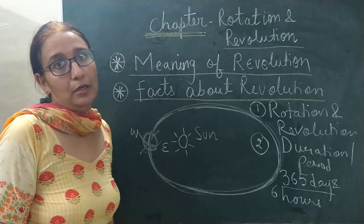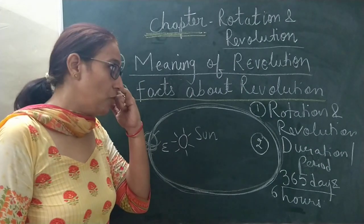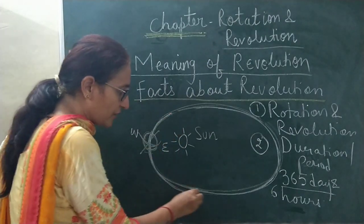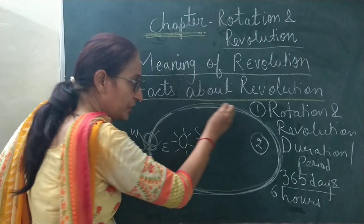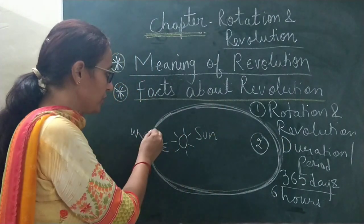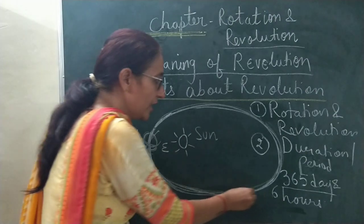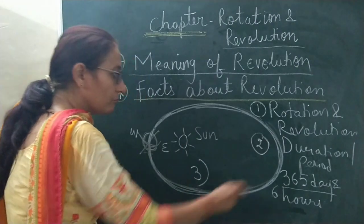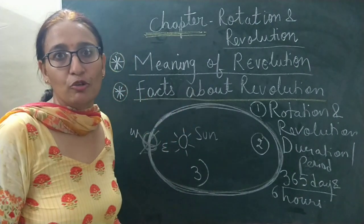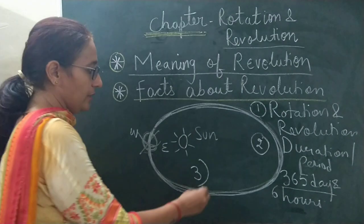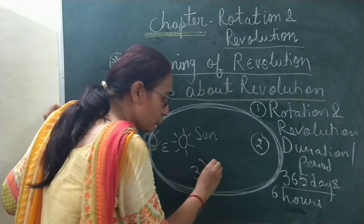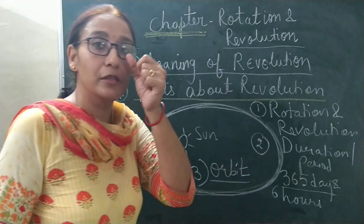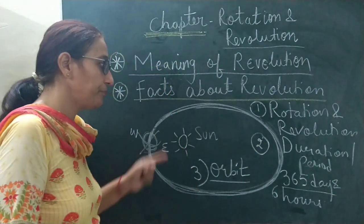What is the third interesting fact about the revolution of the earth? There is a fixed path on which the earth is moving around the sun. What do we call this path — the fixed path on which the earth moves around the sun? This path is called orbit. Orbit is a fixed path on which the earth moves around the sun.